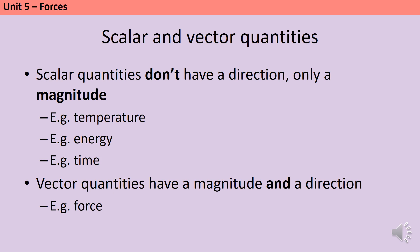If I push with a force of 100 newtons to the left, or a force of 100 newtons to the right, then the motion of my object will be fundamentally different. This idea of scalars and vectors is really important for this topic because we're going to look at two pairs of quantities where the difference is that one is a scalar and one is a vector — so distance and displacement, and speed and velocity.